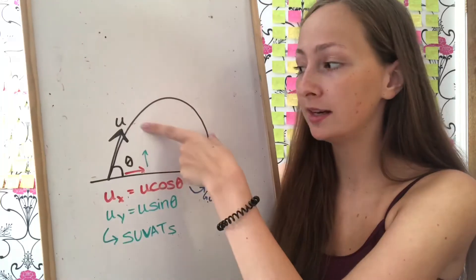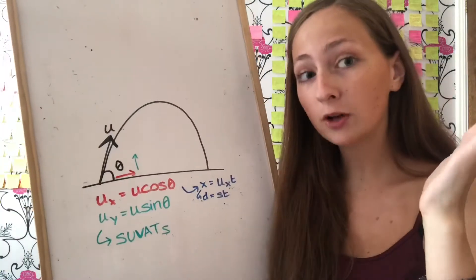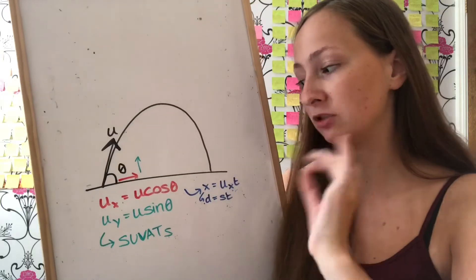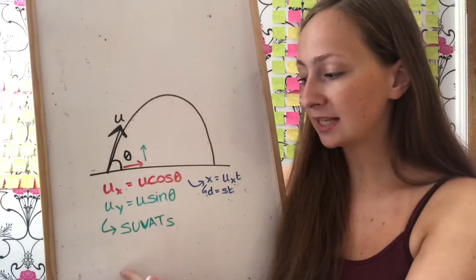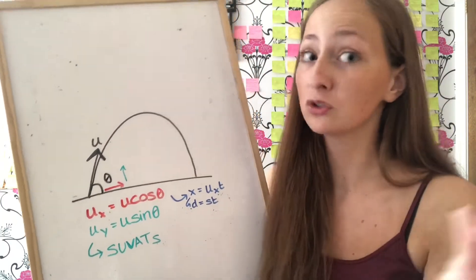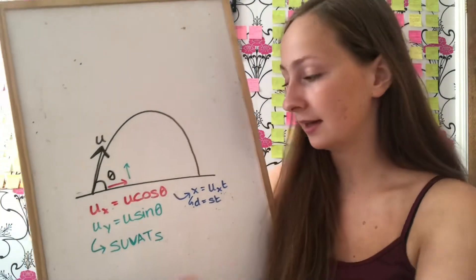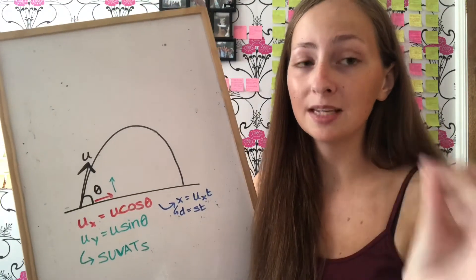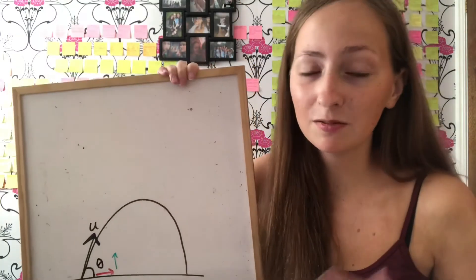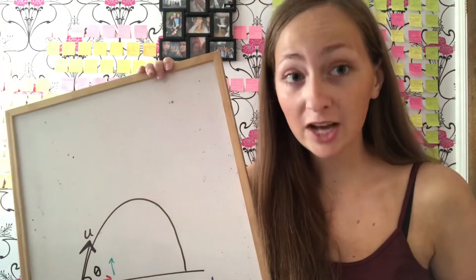Projectiles also require trigonometry. If the initial speed is at an angle, you separate it into horizontal and vertical components: horizontal speed is u cosθ and vertical speed is u sinθ. The vertical component is plugged into suvat equations because gravity acts vertically. The horizontal component has no vertical motion, so it doesn't consider gravity — distance equals u cosθ times t.